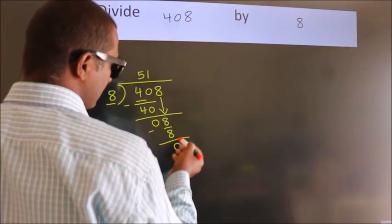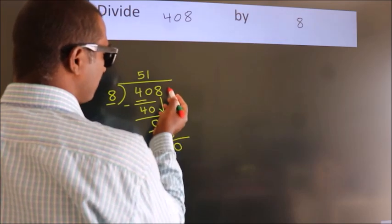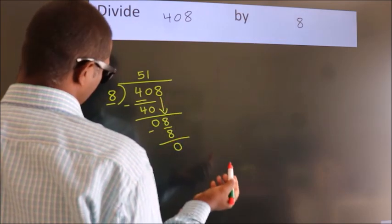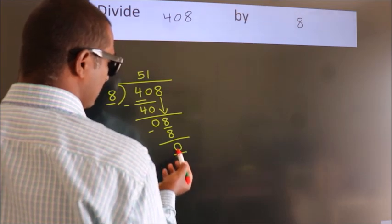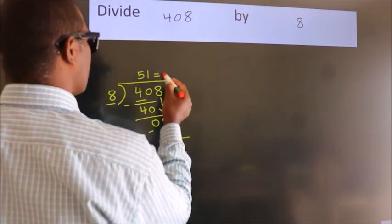After this, no more numbers to bring it down. And we got remainder 0. So this is our quotient.